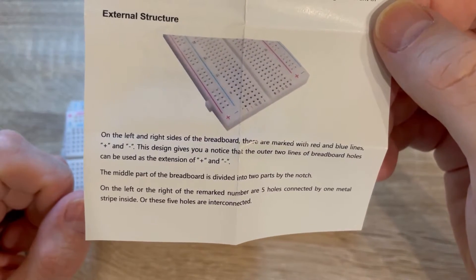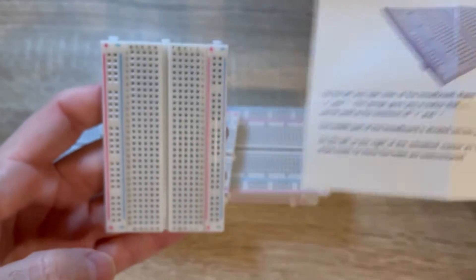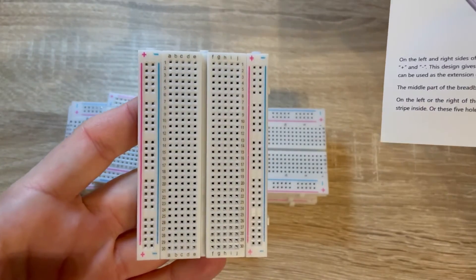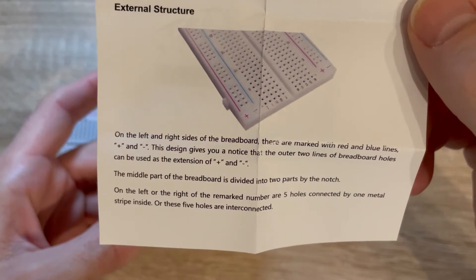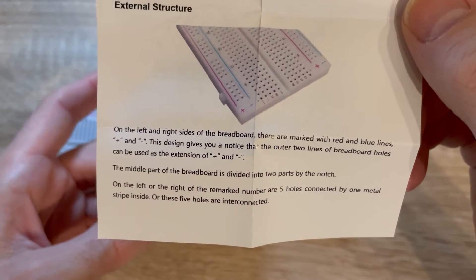They look at it this way. 'Left and right sides of the breadboard are marked with red and blue lines and plus and minus. This design gives you notice that the outer two lines of breadboard holes can be used as the extension of plus and